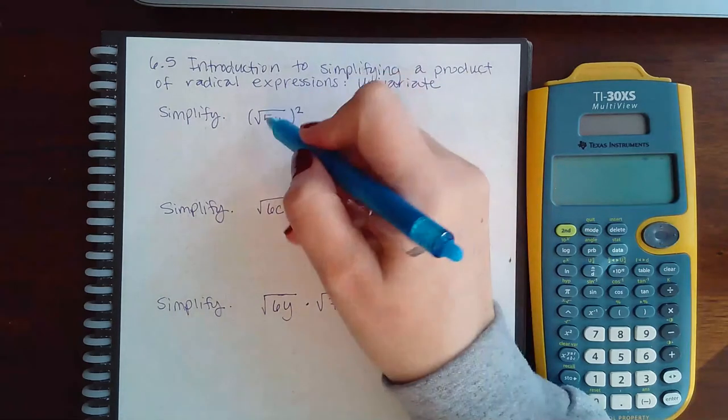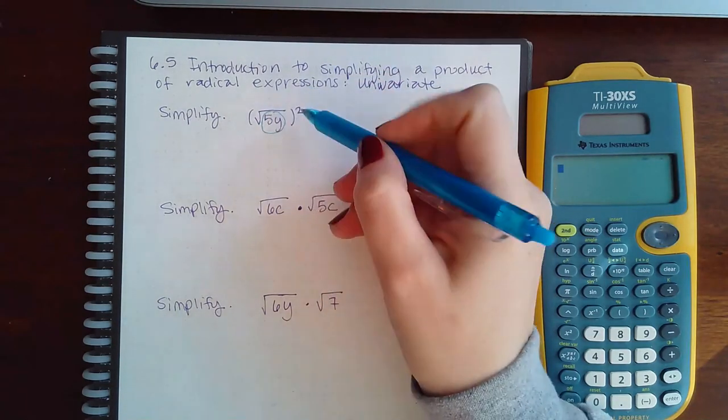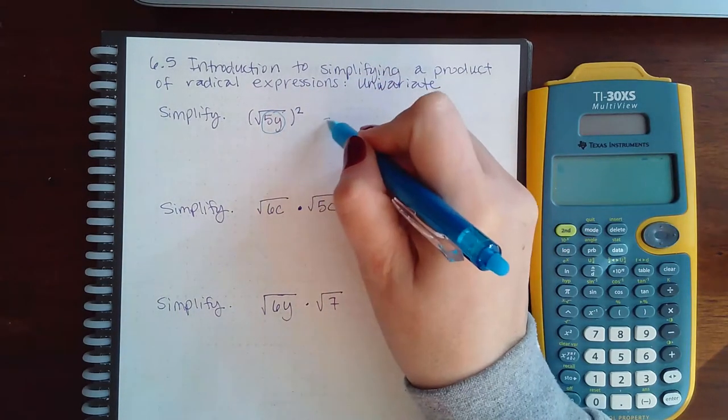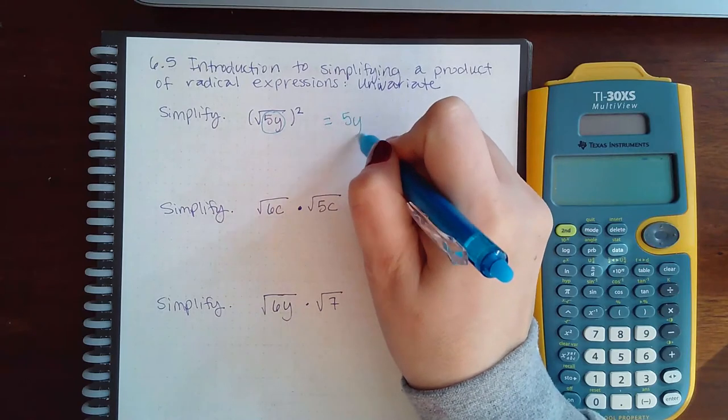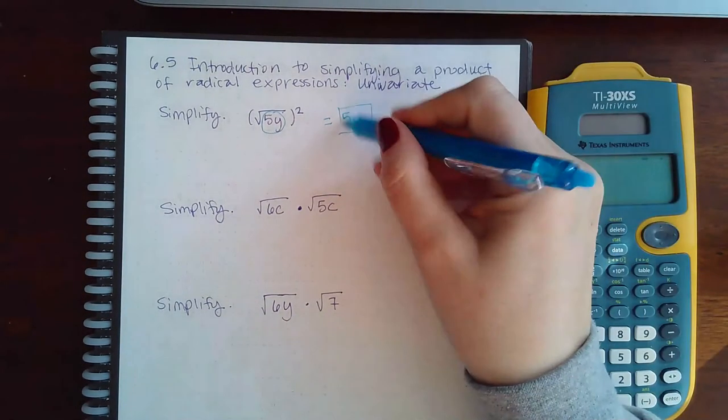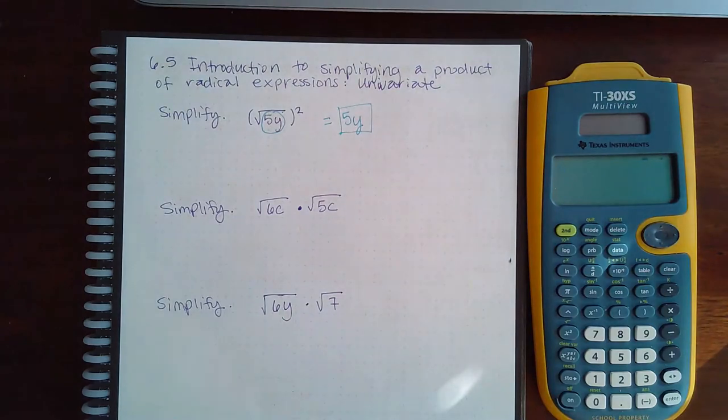So if I have something inside the house, that square and that square root are still going to undo each other and I'm just going to be left with what's inside the house. So there's really nothing new there, it's just now there's a letter.